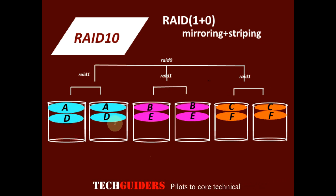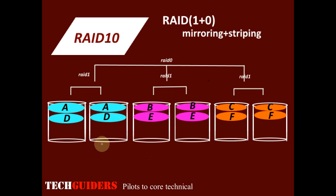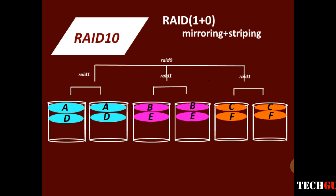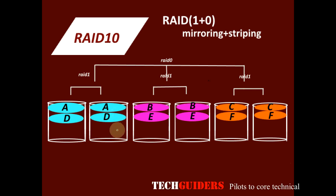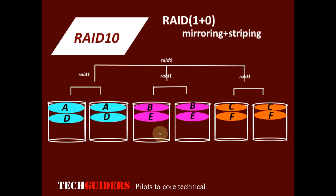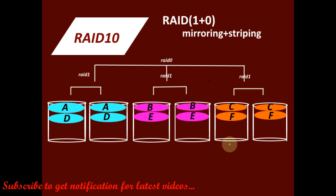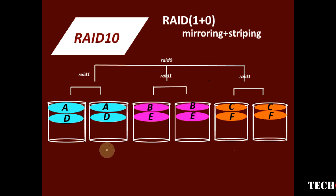About disk capacity: the usable disk capacity is reduced to 50% since everything is duplicated. For example, if each disk is 1TB in size, then out of 6TB total, only 3TB will be available for data, with the remaining 3TB used for redundant information.